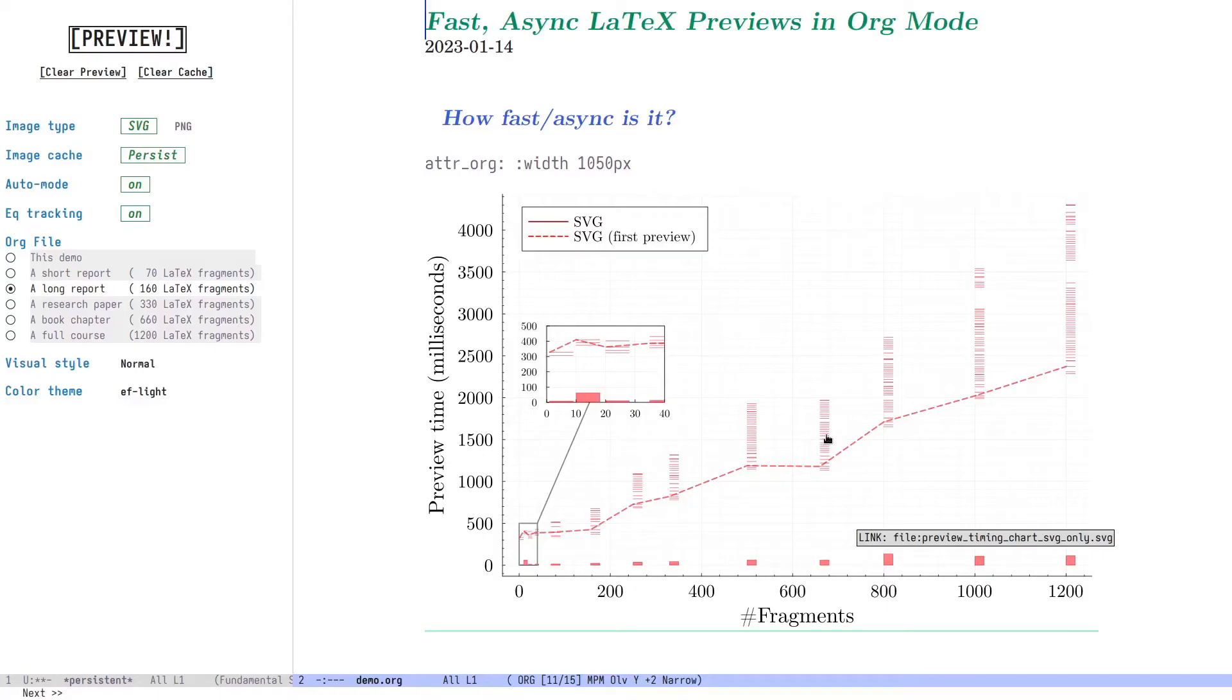The dashed line tells us how long it takes until the first batch of preview images start coming in. In practical terms, that's how long you need to wait, and it's not bad at all. A single fragment takes about 300 milliseconds. And with 1200 fragments, it takes about 2.5 seconds until the first preview image appears.